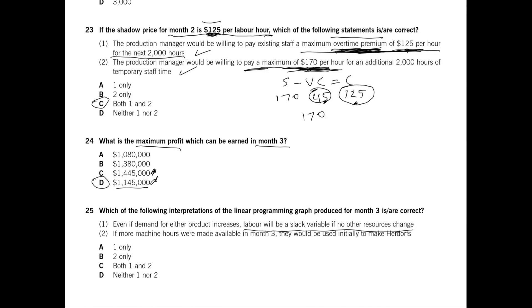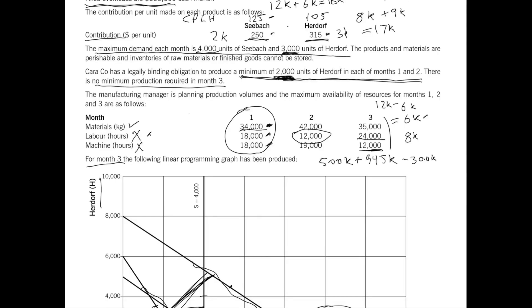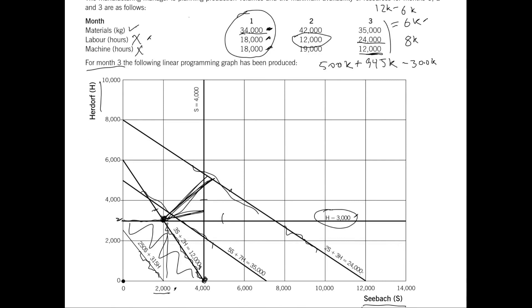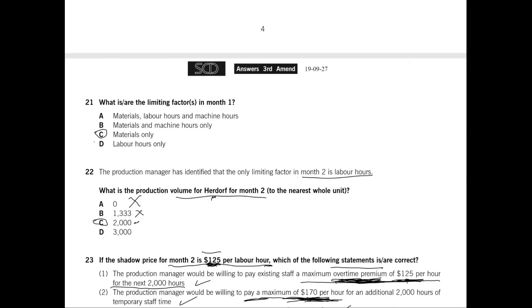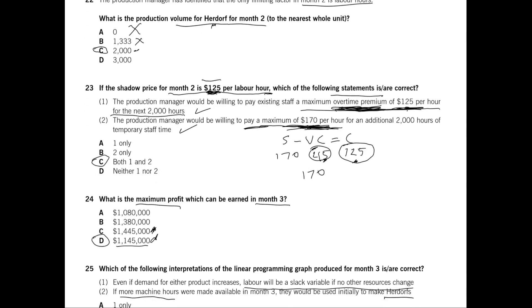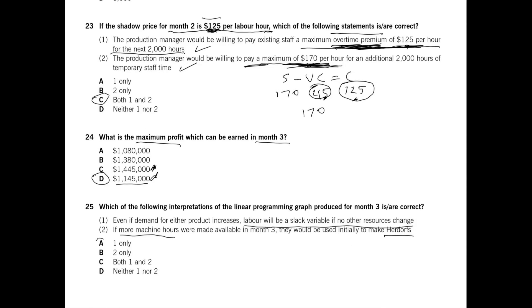Statement two: if more machine hours were made available in month three, they would initially be used to make Herdorf. Machine hours is our binding constraint, so extra hours would be valuable. However, we're already producing 3,000 units of Herdorf — the maximum demand level. There's no point producing more Herdorf as there's no further demand. Instead, additional machine hours would be used to produce more Seaback, since we were only making 2,000 units against a maximum demand of 4,000. Statement two is incorrect. The answer is A: only statement one is correct.